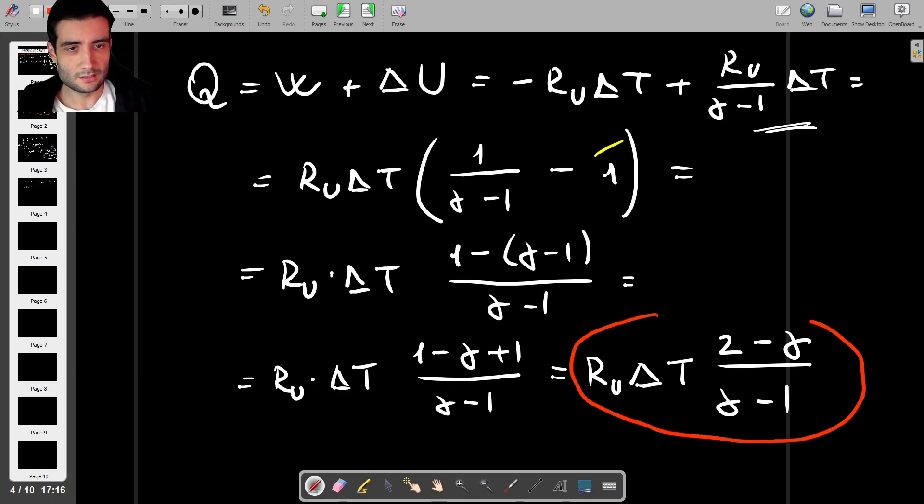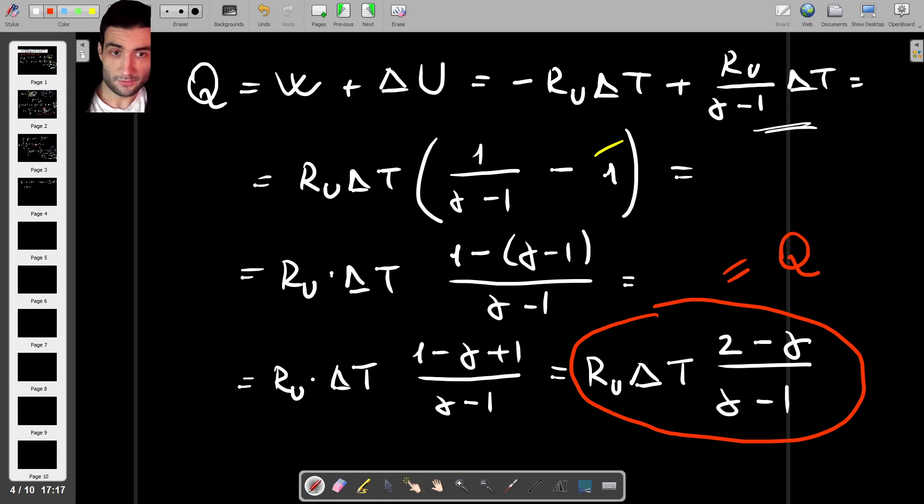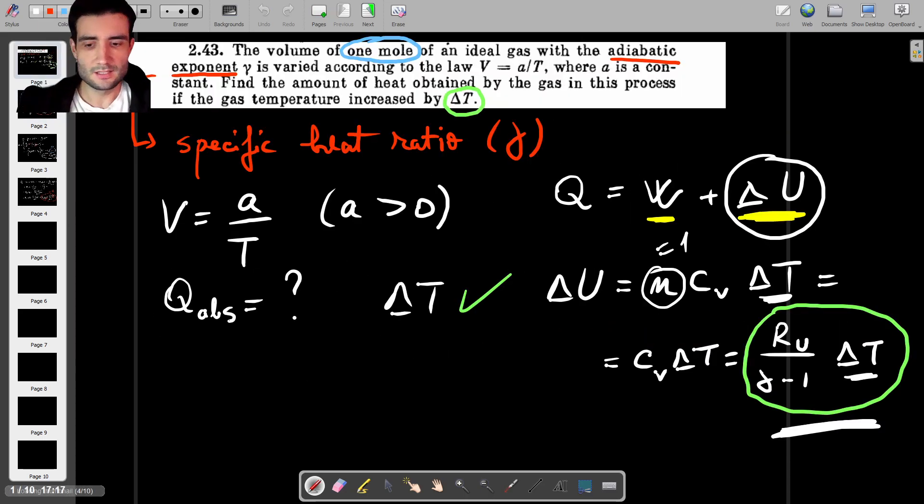And this is the heat so if you think about it we know everything there is to know in this formula. We know the value of the universal gas constant, we know delta T because the problem tells us to pretend that we know that, and we also know the gamma so the final answer is purely expressed in terms of things that we know and that's the end of the question.